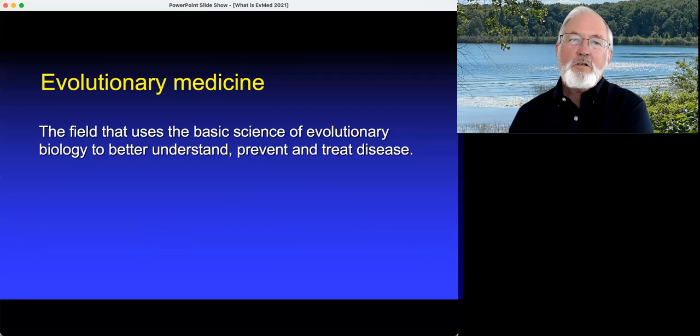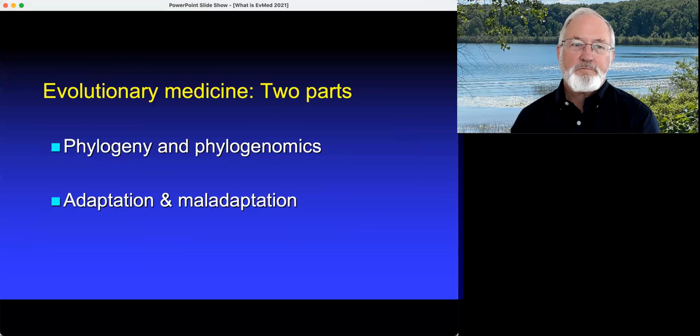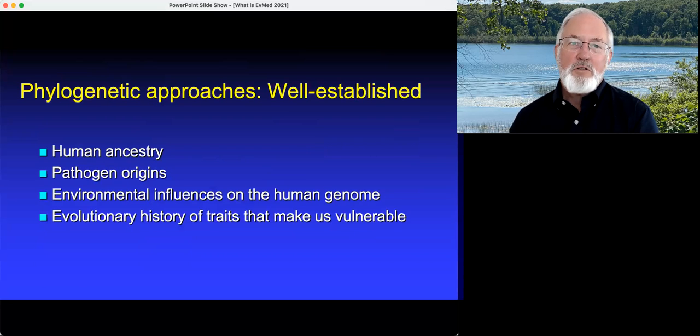Evolutionary medicine is the field that uses the basic science of evolutionary biology to better understand, prevent, and treat disease. There are two parts to it, the same as the two discoveries that Darwin made. One is the unity of all life, uses phylogeny and phylogenomics to trace patterns. And the other is adaptation and maladaptation. The first is well established.